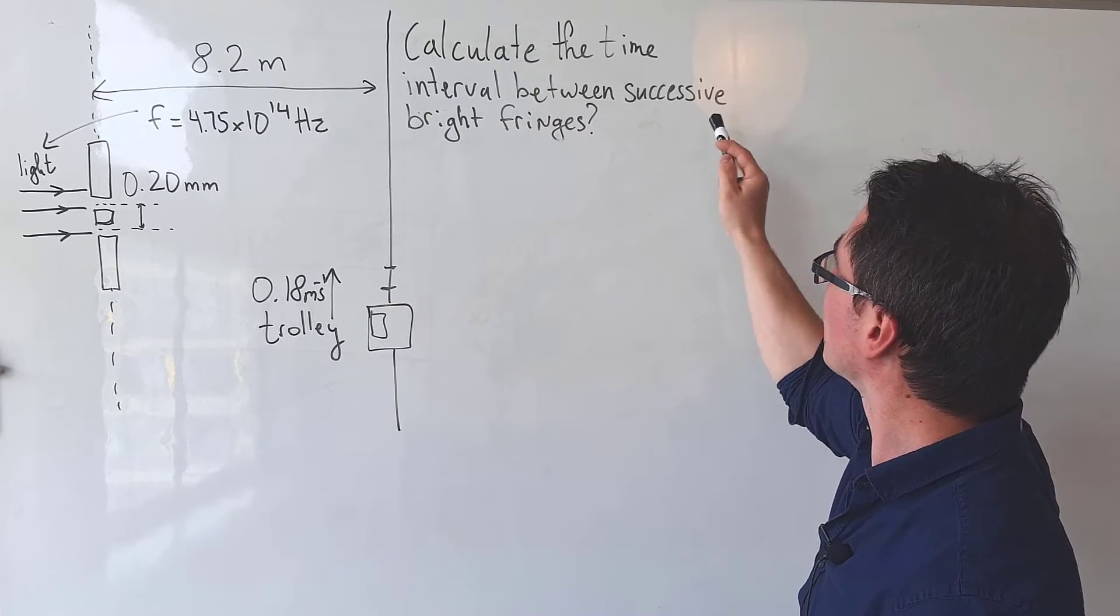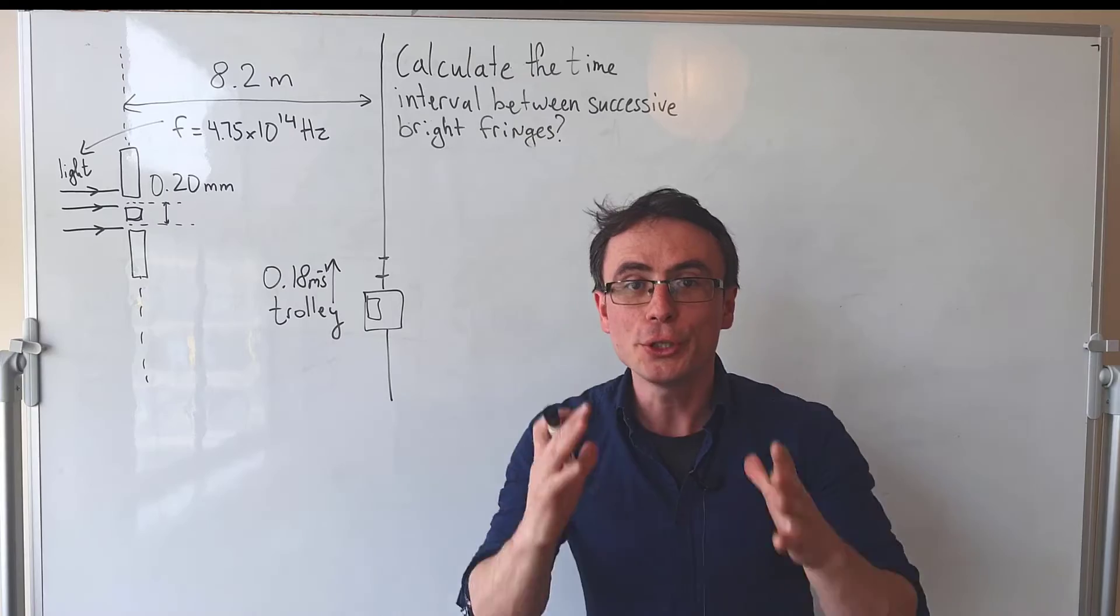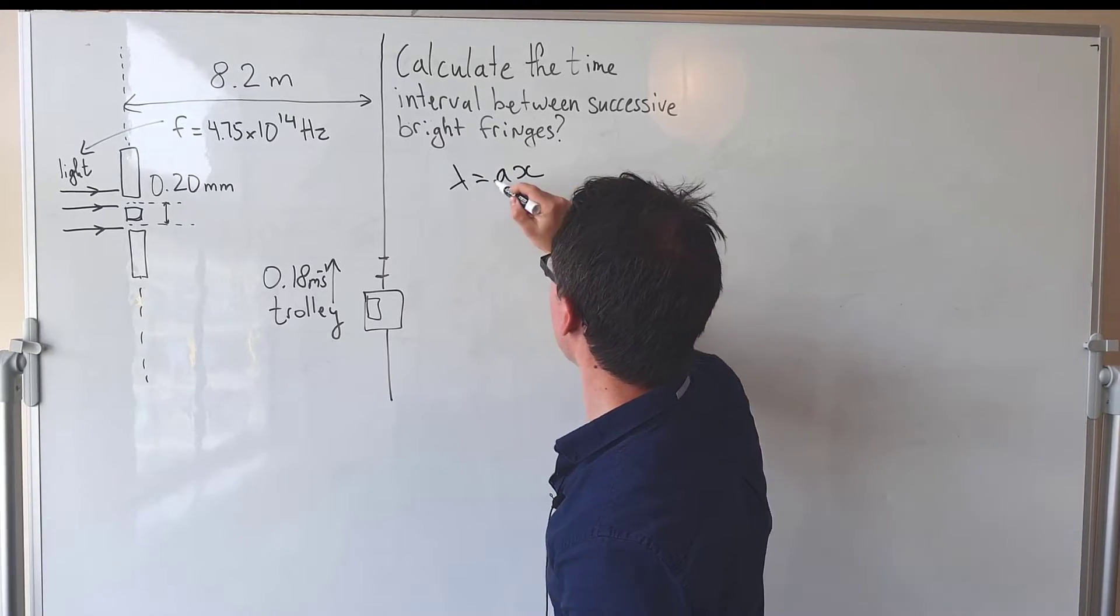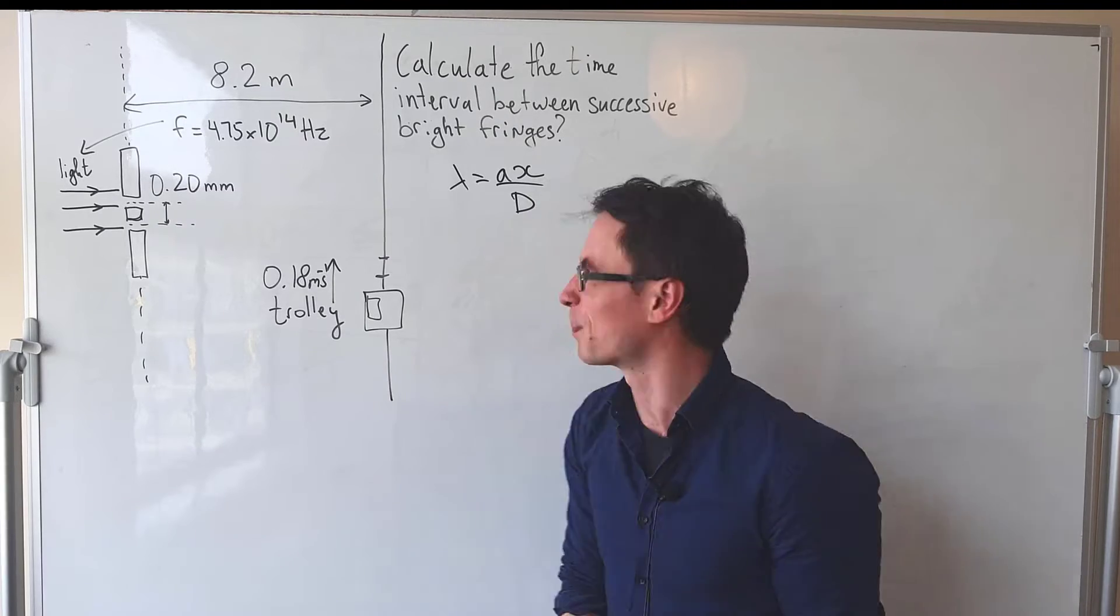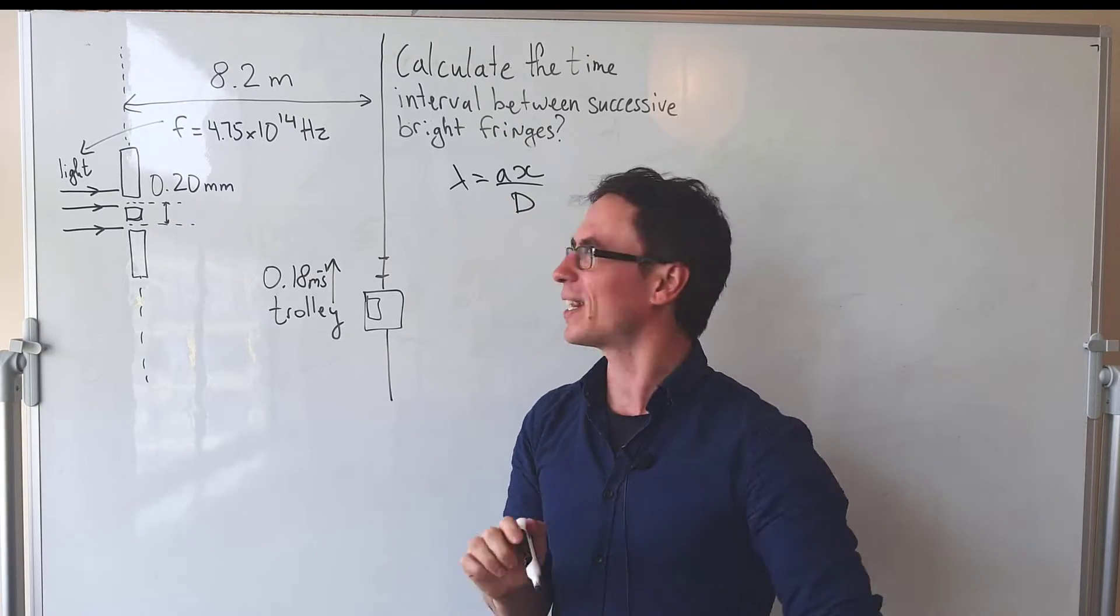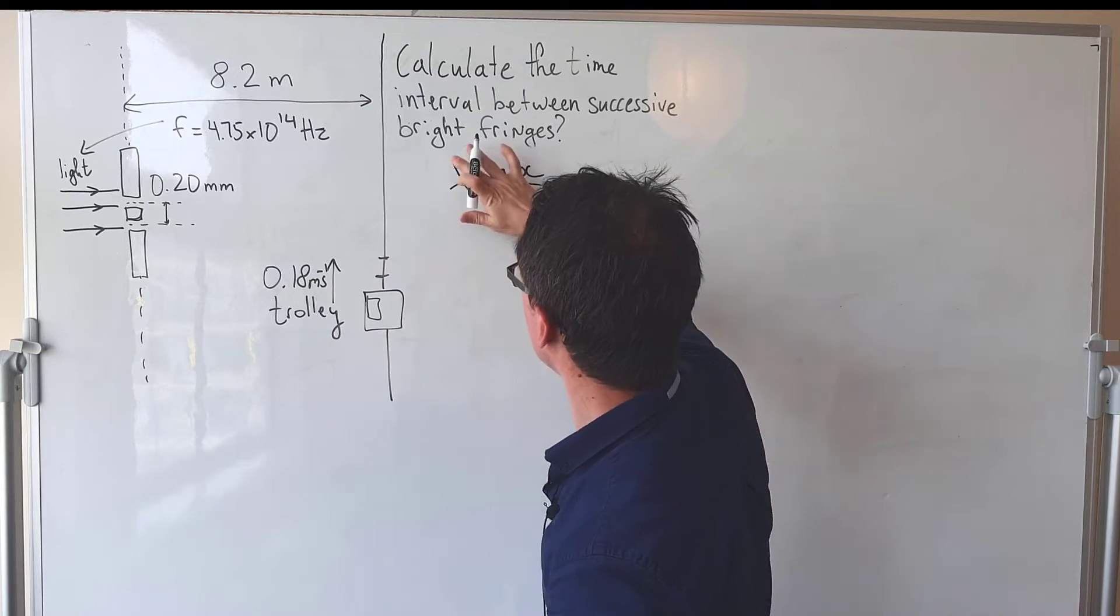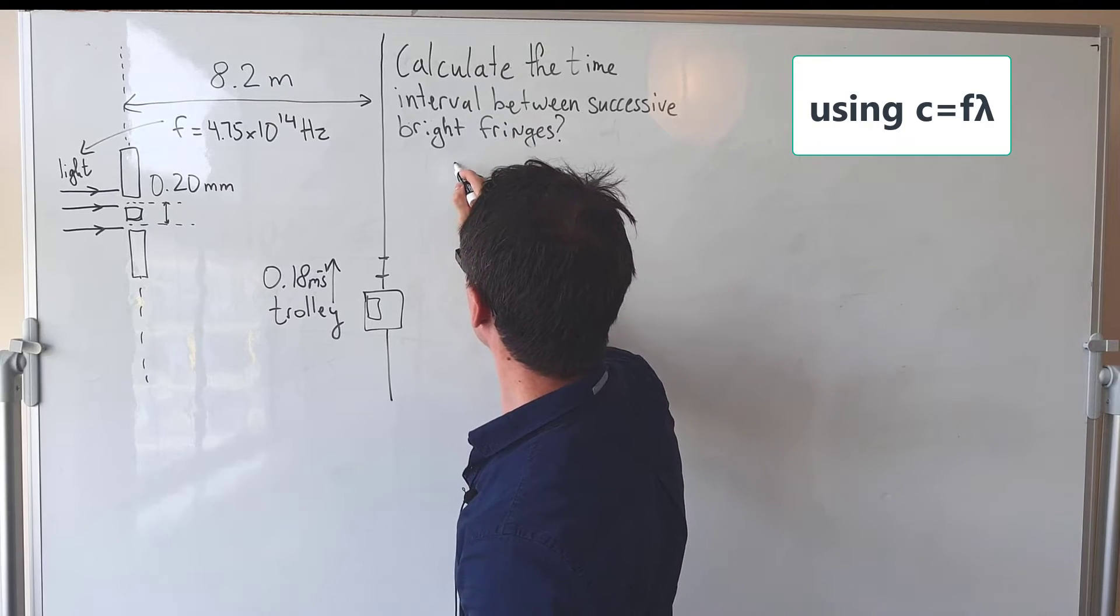Using the famous lambda equals ax over d equation, we should be able to actually work out the fringe separation. We don't actually know what the wavelength is, however we do know the frequency so we can just say that the wavelength will be equal to the speed of light divided by the frequency.